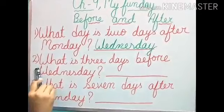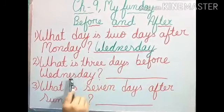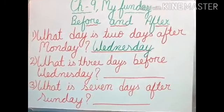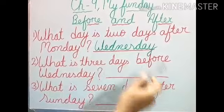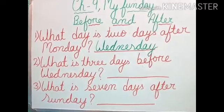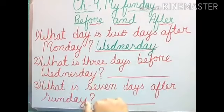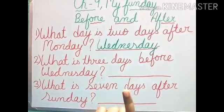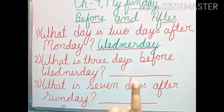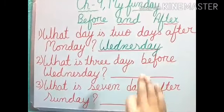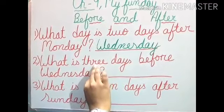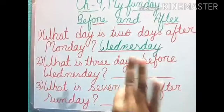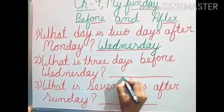Now, number two: What is three days before Wednesday? We have to count before Wednesday, meaning in the opposite direction. Before Wednesday is Tuesday, Monday, Sunday. So three days before Wednesday, we counted Tuesday, Monday, Sunday, and the answer is Sunday.